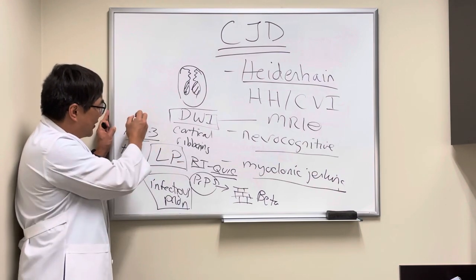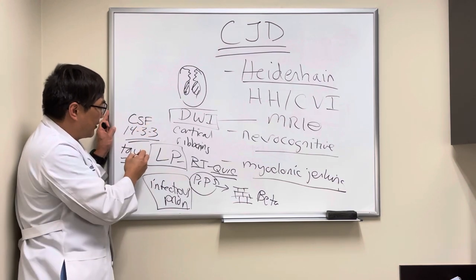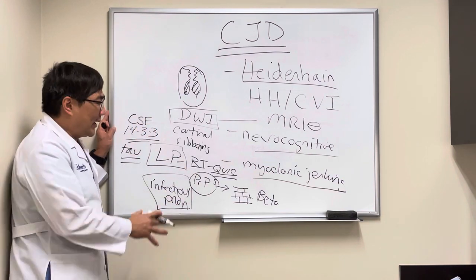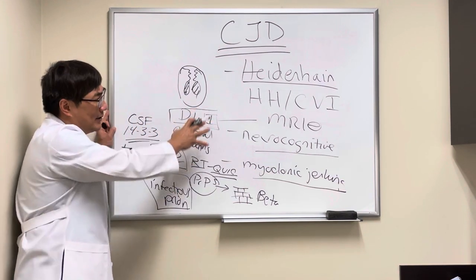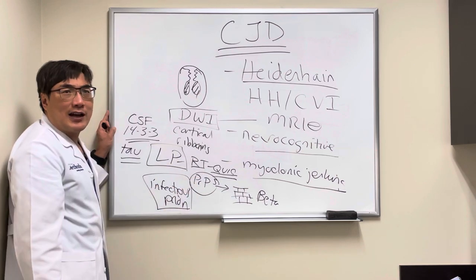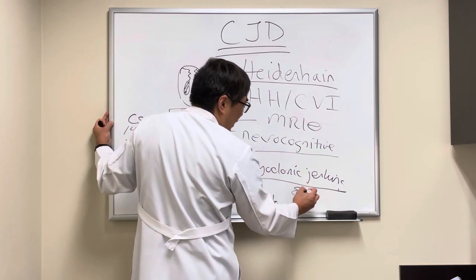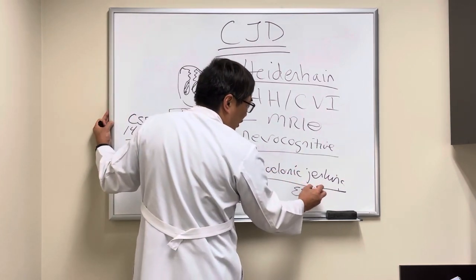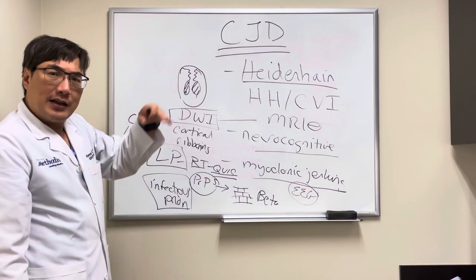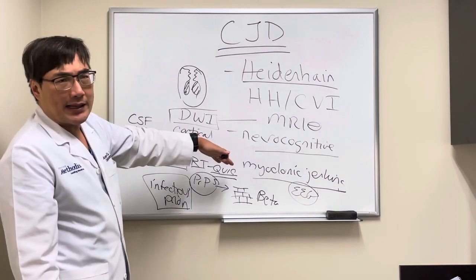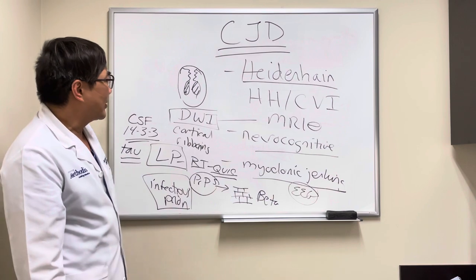The combination of CSF 14-3-3, tau, and RT-QUIC — if they're abnormal — can make the diagnosis of Heidenhain variant CJD. EEG often shows a very classic triphasic component, and that may or may not be present with the myoclonic jerking.